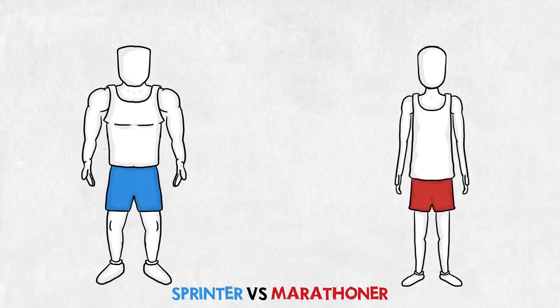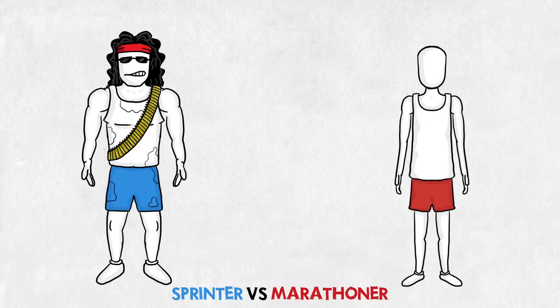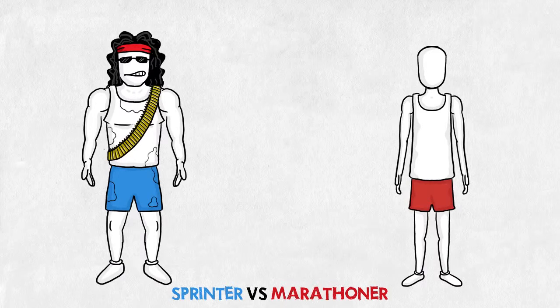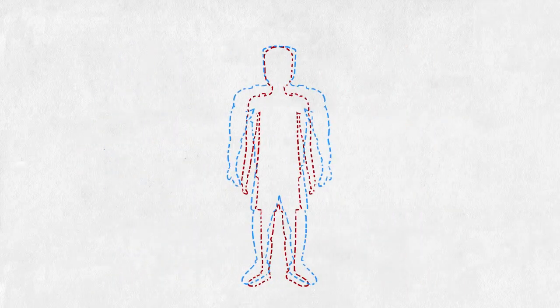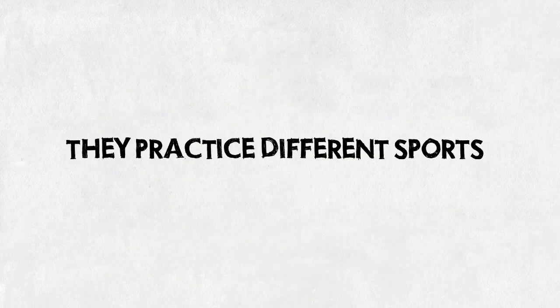In running, you've all seen the sprinter and the marathoner. One looks like an 80s movie character, and the other, like he's had too many crash course diets. They're both runners, so how come they don't look alike? Simple. They practice different sports.